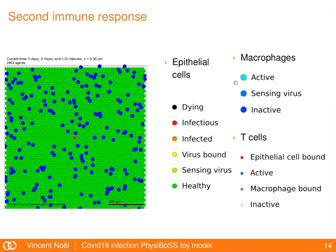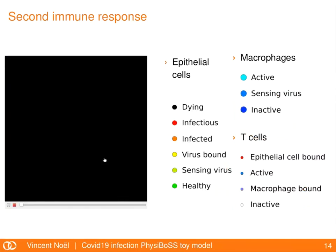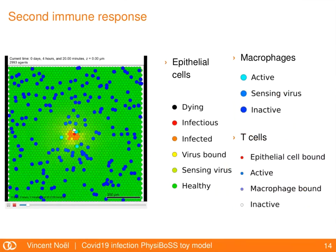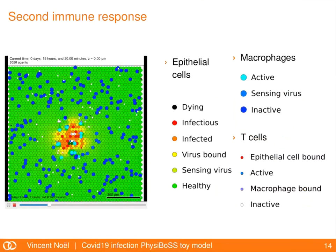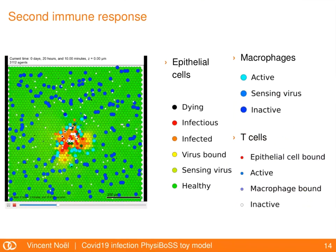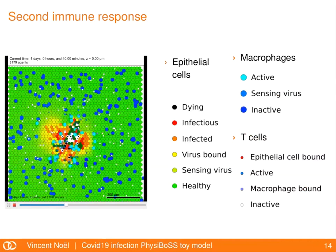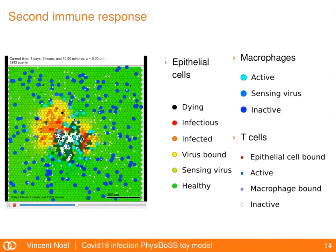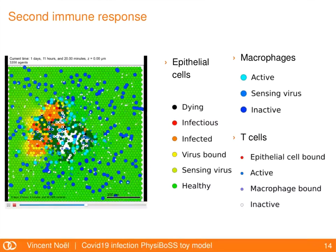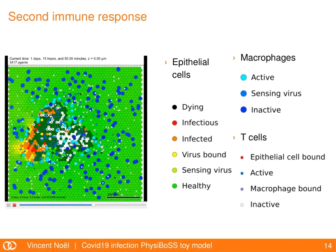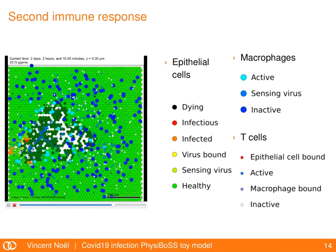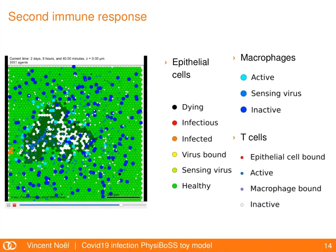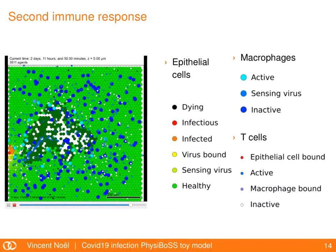Here is the simulation. You still have the epithelial cells and the macrophages in big blue. When macrophages get activated, some really small white cells start arriving around the active macrophages. They bind to them and turn blue. Then they are attracted to the red cells, which are the infectious cells. When they bind to them, they kill them or cure them, turning them dark green. Here we are able to stop the contamination and kill all the infected cells with these T cells.